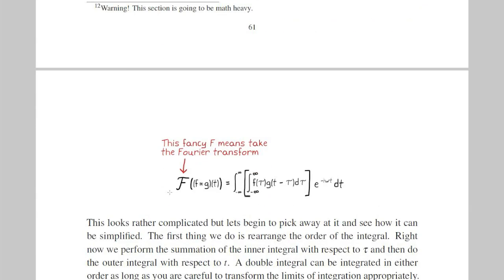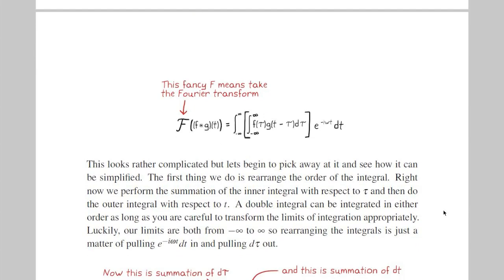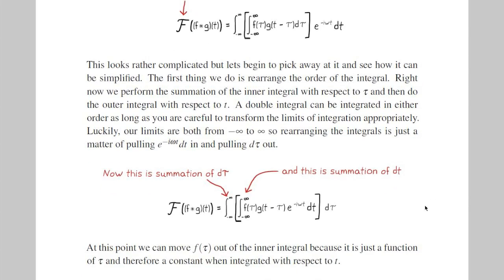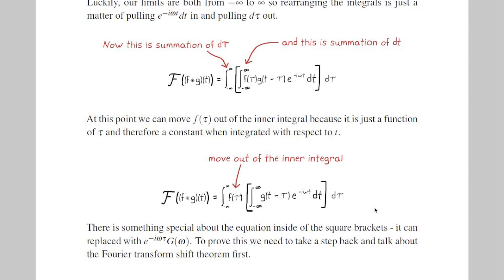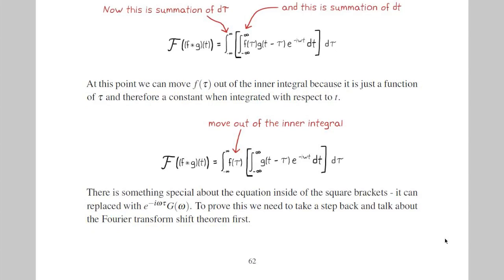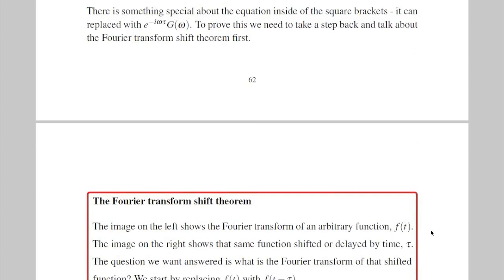The proof starts out easy enough. You just replace f of t in the Fourier transform with the convolution integral. Now, it looks complicated, but we can start to rearrange things and simplify it. First, we reverse the order of the integration, so we integrate with respect to dt first, and then with respect to d tau. We can move f of tau out of the inner integral, since it's constant with respect to t. At this point, we can replace everything inside the square brackets with e to the minus i omega tau times the Fourier transform of g of t. Now, to see why this is true, we need to learn about the Fourier transform shift theorem.